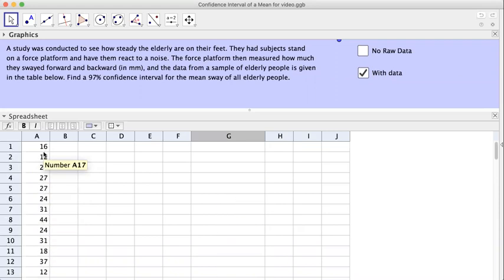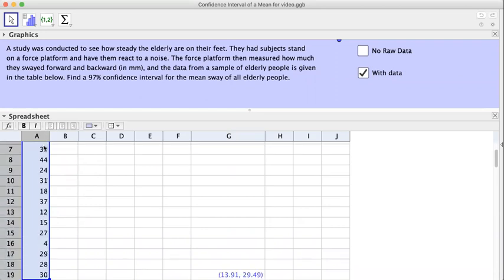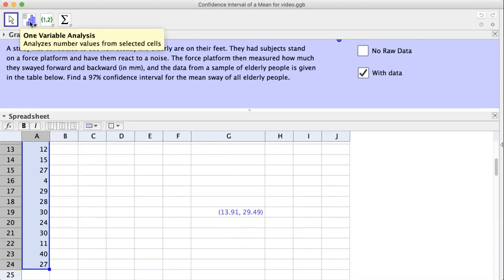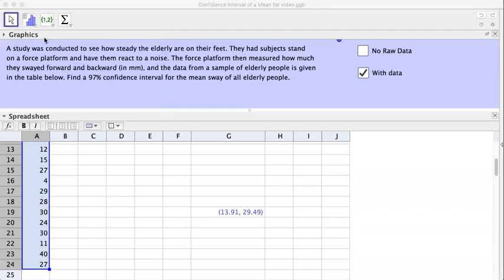First you highlight the numbers. So I have 24 numbers. Make sure you highlight 24 only. And then you click on the symbol right here that says One Variable Analysis. Click on it and do one variable analysis right here.